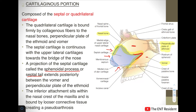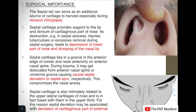The inferior attachment of the septal cartilage sits within the nasal crest of the maxilla and is bound by looser connective tissue, creating a pseudoarthrosis. The septal tail can sometimes serve as an additional source of cartilage to harvest, especially during surgeries like revision rhinoplasty.